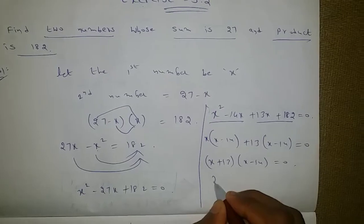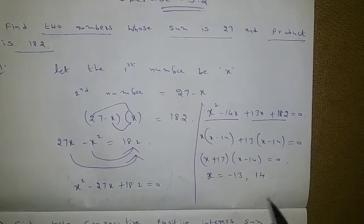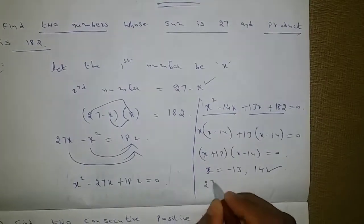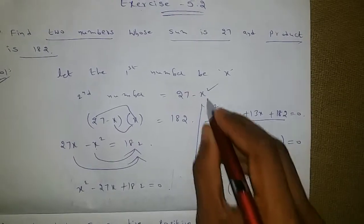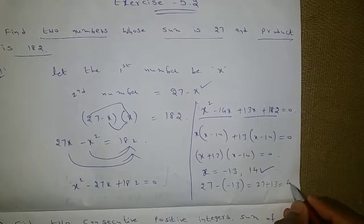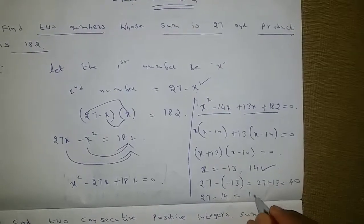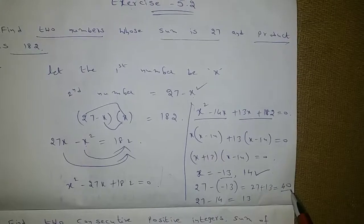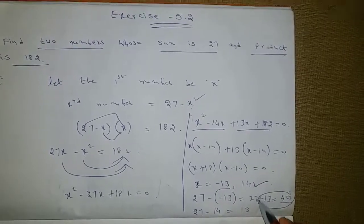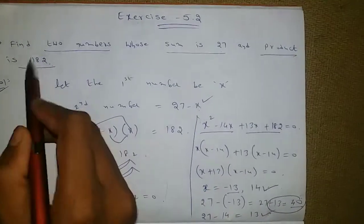So x value is either minus 13 or plus 14. Substituting x equals minus 13: the second number is 27 minus minus 13, which is 40. But minus 13 times 40 is not 182, so that is not the answer. With x equals 14: the second number is 27 minus 14 equals 13. So the correct numbers are 14 and 13, since 14 plus 13 is 27 and 14 times 13 is 182.